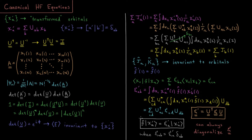The remaining work in this chapter on Hartree-Fock theory addresses how we get to the situation where our orbitals are all eigenfunctions of the Fock operator.